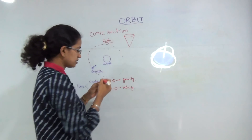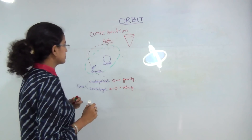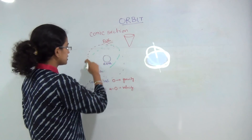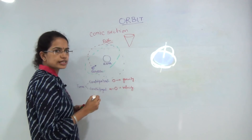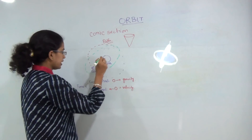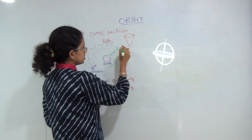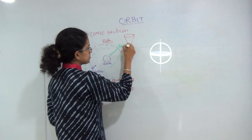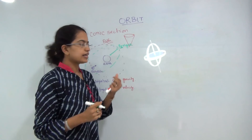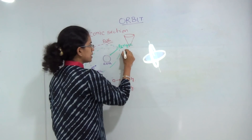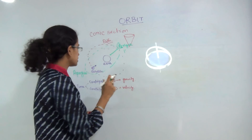Cutting the cone along a slanting line gives an elliptical path. Whenever there is an elliptical path, there are two edges: one edge is close to the earth and the other is far away. The edge that is far away is known as apogee, and the edge closer to the earth is known as perigee. An easy way to remember: 'p' for perigee means 'pass' (close), so perigee is the closest point and apogee is the farthest.